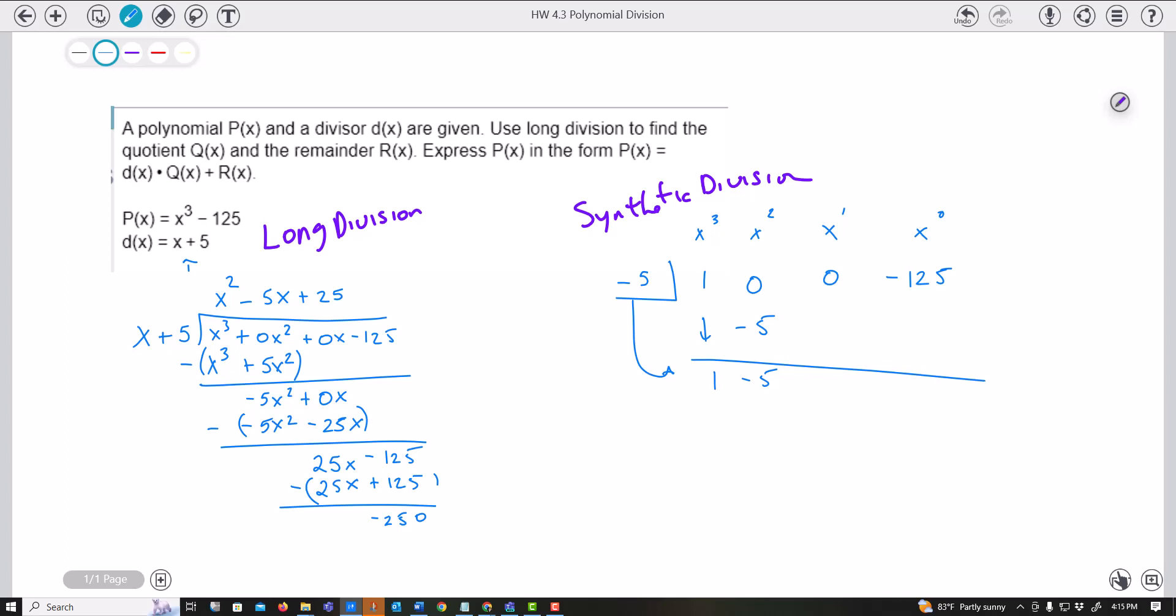And so now I'll do negative 5 times negative 5. So that's positive 25. And then I'll do negative 5 times 25, which is negative 125.